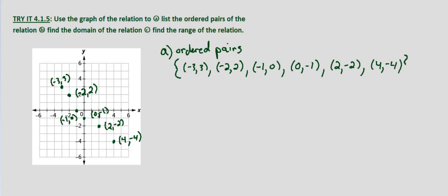And now we're right back to problems that we've looked at in the past. The domain, again, is the set of x values. So we'll put it in set notation. And from least to greatest, we have negative 3, negative 2, negative 1, 0, 2, and 4. And again, those simply come from the x values in our ordered pairs.